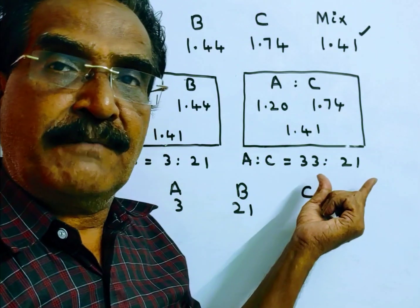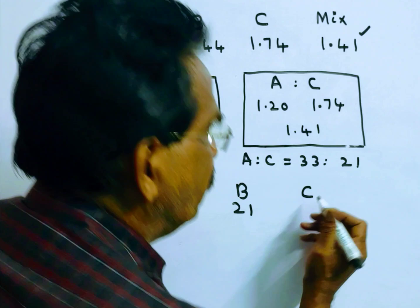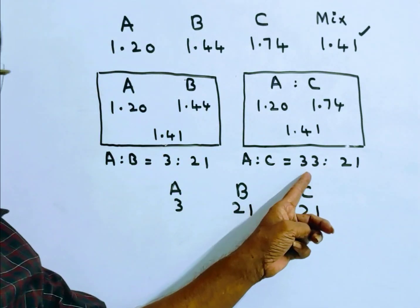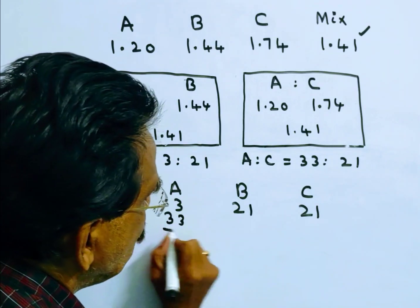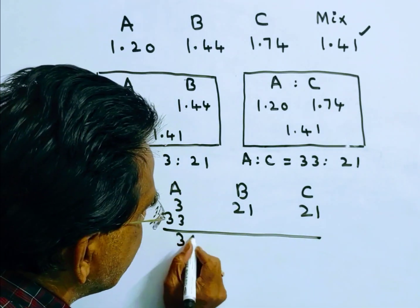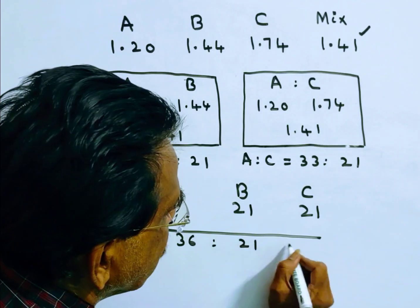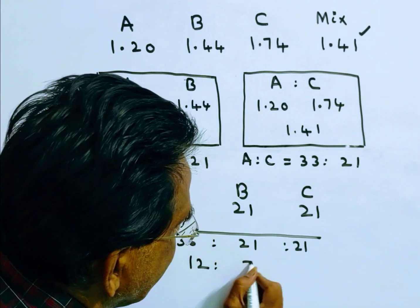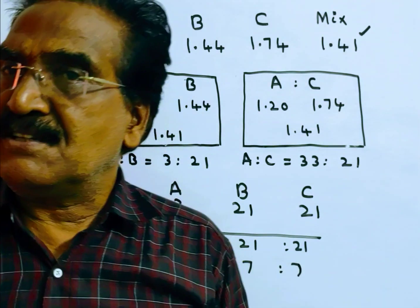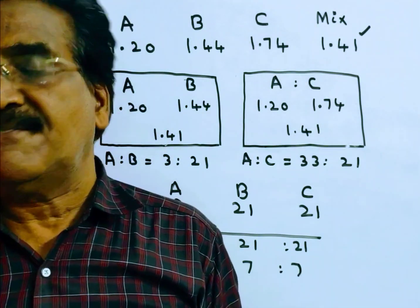From the second ratio, for every 21 cases of type C, we have to take 33 cases of type A. So 36 is to 21 is to 21. 3 divides into 12 and 7, so 12 is to 7 is to 7 is one such solution, friends.